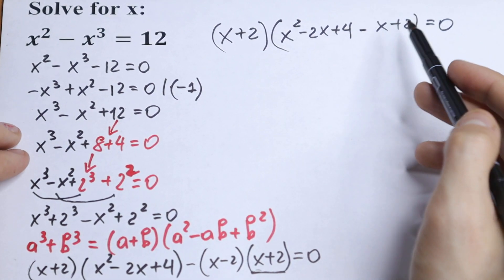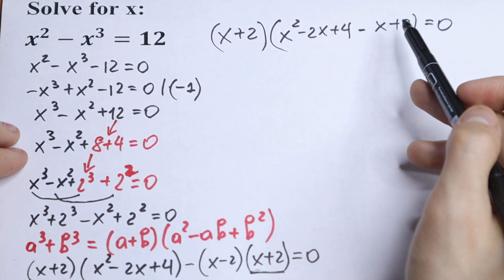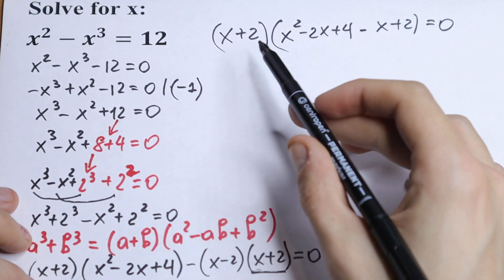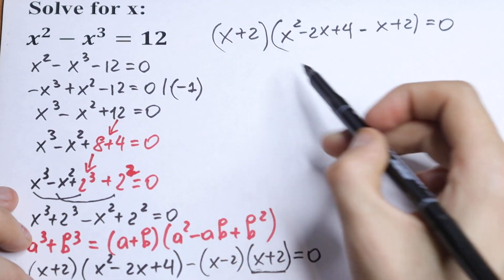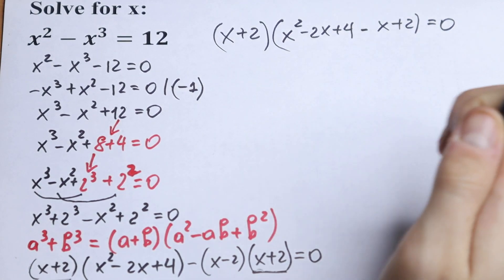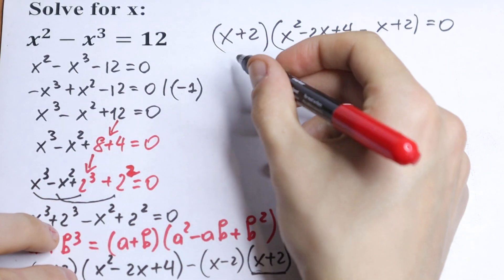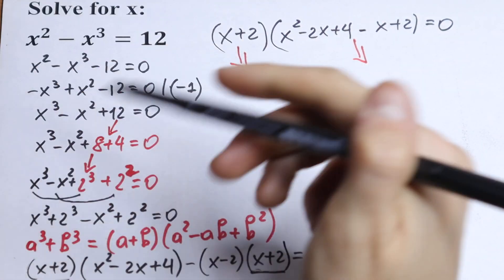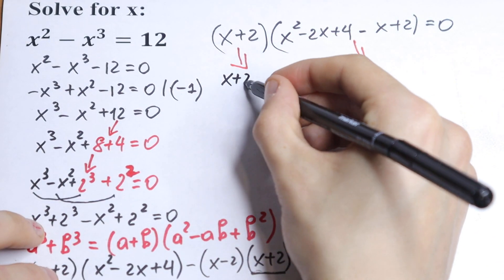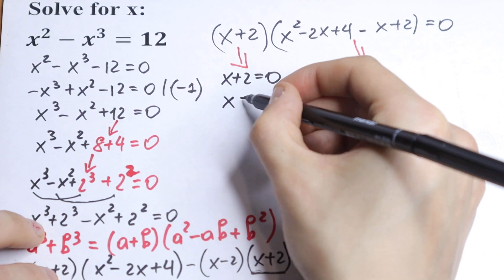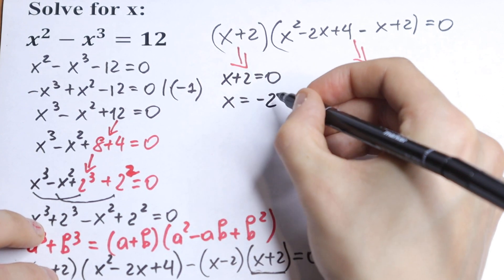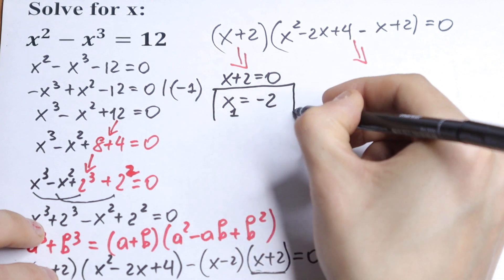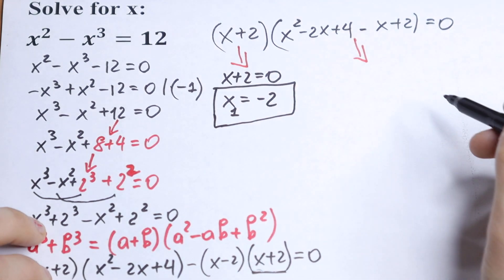I open the parentheses now — skipping the intermediate step. So we have parentheses times parentheses equal to 0. Of course the first root is obvious: x plus 2 equal to 0, so x equal to minus 2. And this will be our first root in real numbers.